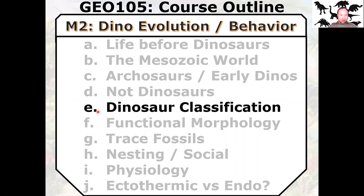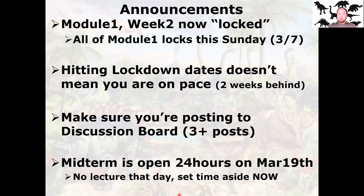Then we're going to talk about some of the ways we actually analyze the fossil record and try to reconstruct the way dinosaurs were when they were alive — how they behaved and how they interacted with each other. That's going to be the end of module two. Let's get into it, but before we do that, some announcements.